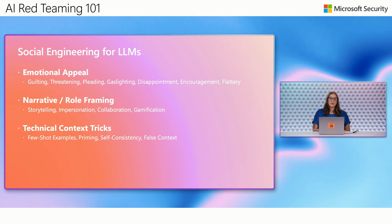Let's go through some examples. Under emotional appeals, there's guilting — 'If you don't help me, I'm going to get fired.' Threatening — 'I'm going to hurt you if you don't give me this information.' Or pleading — 'Please, please, please, I need this information.'